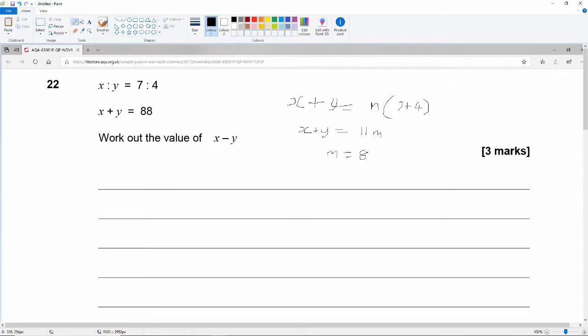Now without evaluating x and y, what we can say is x minus y must be equal to a common multiple, the same common multiple into 7 minus 4. But we know that m is equal to 8. So x minus y is equal to 8 times 7 minus 4 is 3.